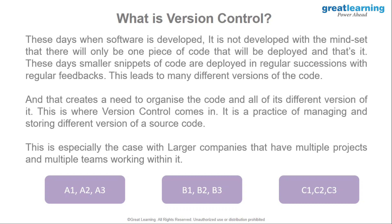To handle this, they pull back A3 and push A2 again, since A2 was the latest stable version working fine for six months. This ensures clients still have a working product. Meanwhile, they debug A3, rectify the mistake, and there is no downtime for the final application. Project B and Project C can also continue working without any integration issues.